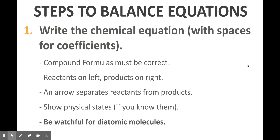Step one is to write the chemical equation — that's what the last video lecture was about, and it is of course the first step in this process. You have to make sure that you are working with an accurate chemical equation. Make sure each of your compound formulas is correct, all your reactants are on the left and products are on the right, and you're using an arrow to separate your reactants from your products — not an equal sign, which is a common mistake.